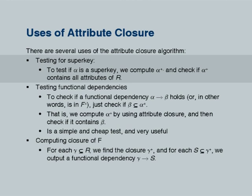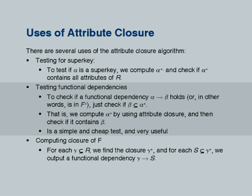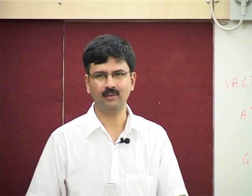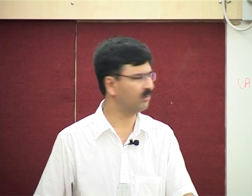What can we do with attribute closure? We can check if something is a super key by computing its closure. We can also check if a particular functional dependency α→β holds very simply: compute α+ and check if β is contained in it. This is much cheaper than computing the entire closure F+. Attribute closure is generally an easier way to check things than applying Armstrong's axioms directly.